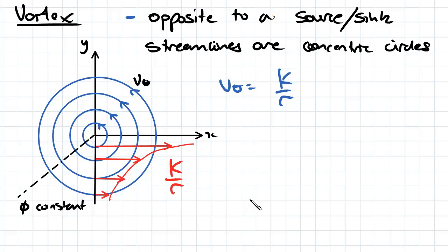And you'll notice it looks quite similar to the source and sink equation. We don't have that M over 2 pi now. We have the K and then the streamline and velocity potential functions are obviously opposite.